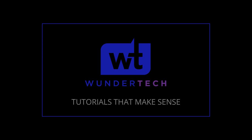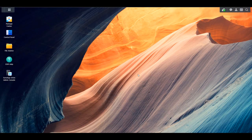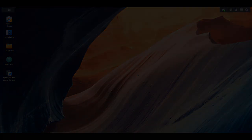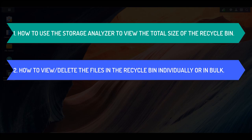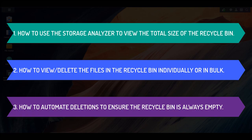If you're deleting files on your NAS and you're not seeing any of the storage space reclaimed, there's probably a pretty good chance that you need to empty your recycle bin. In this video, we're going to look at how you can use the storage analyzer to view the total size of your recycle bins, view and delete the files in your recycle bin, and then how to automate this process. Stick around until the end if you aren't seeing the storage space reclaimed after you empty the recycle bins, because we'll be taking a look at exactly why this might be happening.